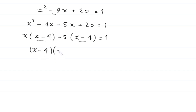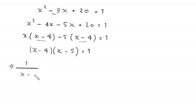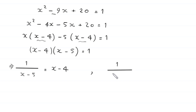Since x minus 4 is a common factor, we factor it out to get (x minus 4)(x minus 5) equals 1. Dividing both sides by x minus 5 gives 1 over (x minus 5) equals x minus 4. Dividing both sides by x minus 4 gives 1 over (x minus 4) equals x minus 5.